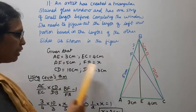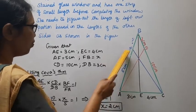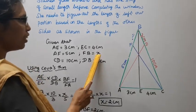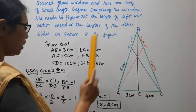Given that AE is 3cm, EC is 4cm, AF is 5cm, FB is x, CD is 10cm, DB is 3cm.